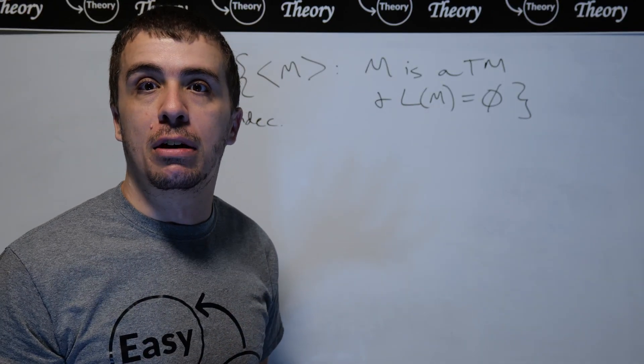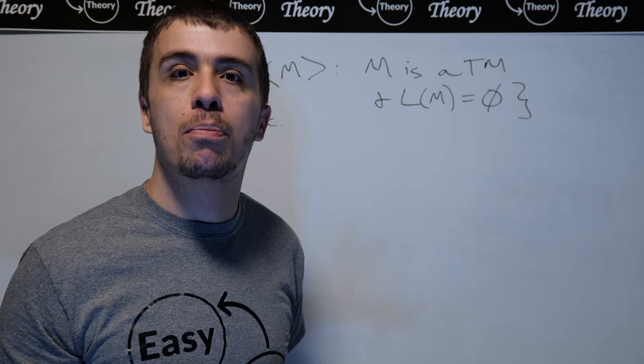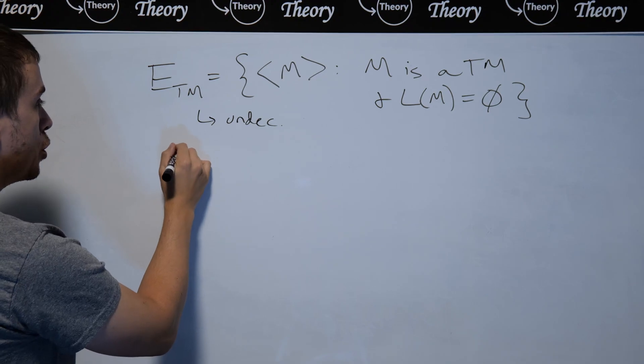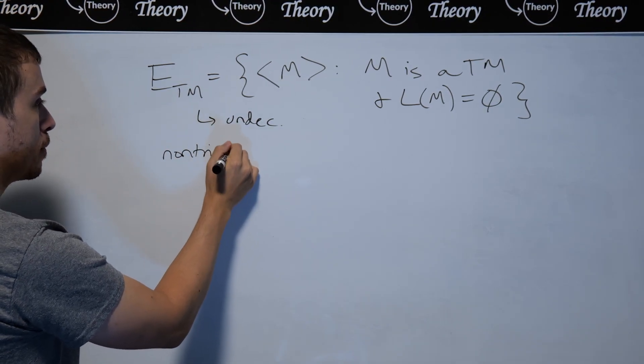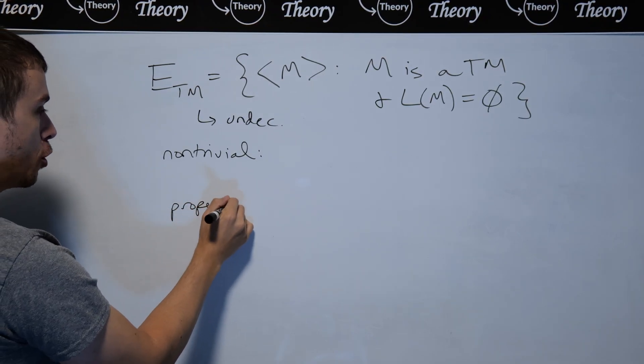So how do you apply Rice's theorem? You have to show that this language is a non-trivial property of Turing machine languages. So what do we do here? We need to show that it's non-trivial and it's a property of Turing machine languages.